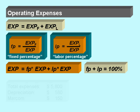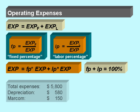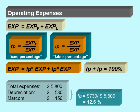For example, if we have total expenses of $5,800 and depreciation and fixed marketing costs of $580 and $150, then FP will be $730 over $5,800 equals 12.6%.